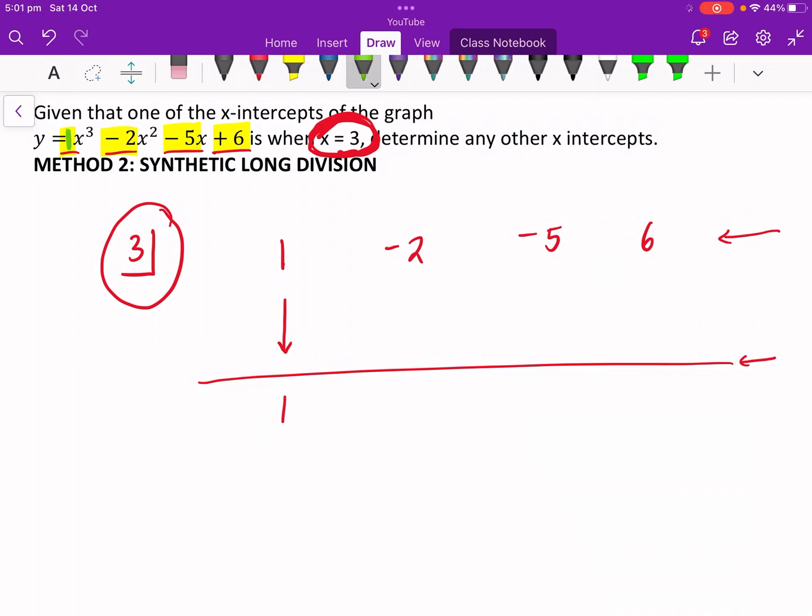Now look really carefully. I'm actually going to use a thicker green. So 3 times by 1 gives you 3. We're going to add these up. So negative 2 plus 3 is positive 1. I'm going to now go to a different color. 3 times by 1 is 3. We're going to add it up. Negative 5 plus 3 is negative 2.